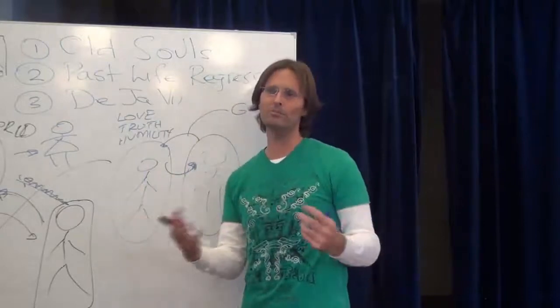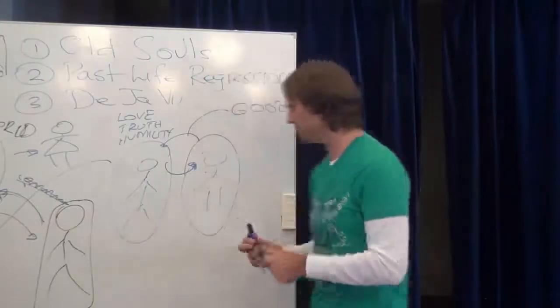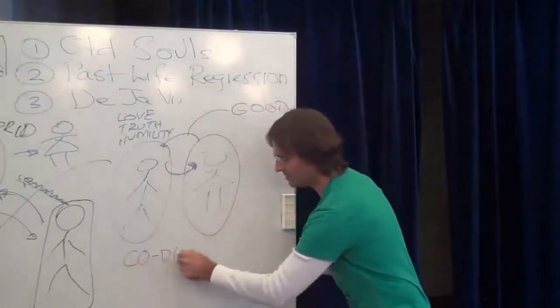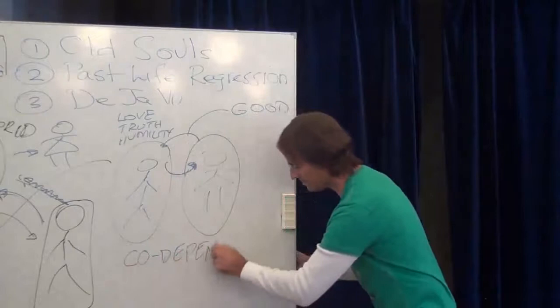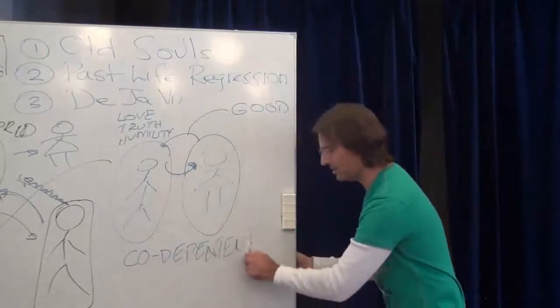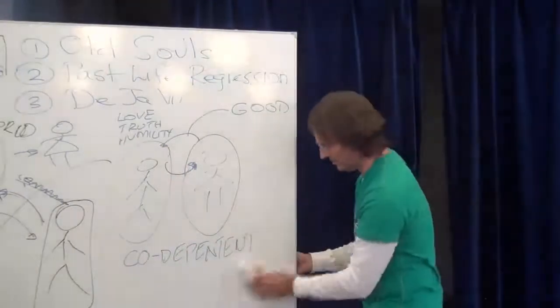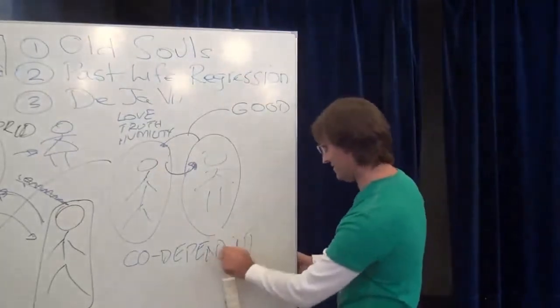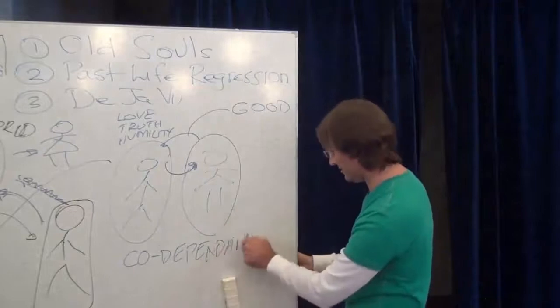And so it's very, very important for me to resolve those dependencies. I would call this a co-dependent relationship, right? And that's an A, isn't it? And a D. A co-dependent relationship.